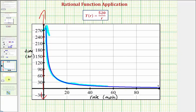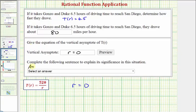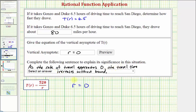Which means as the rate approaches zero miles per hour, the travel time approaches infinity or increases without bound. So we'll say, as the rate of travel approaches zero or zero miles per hour, the travel time increases without bound, or we could also say approaches positive infinity.